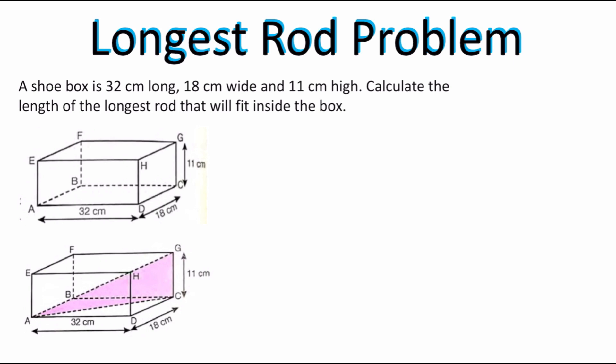Let's take a look at the example on your screen. A shoe box is 32 centimeters long, 18 centimeters wide, and 11 centimeters high. Calculate the length of the longest rod that will fit inside the box. One thing you need to realize is that this is a 3D figure drawn on a flat surface. These corners I'm marking in blue don't actually look like 90-degree angles, but if you grab any rectangular prism, every single corner angle is 90 degrees because it is a rectangle.